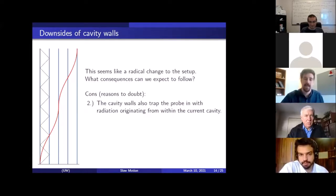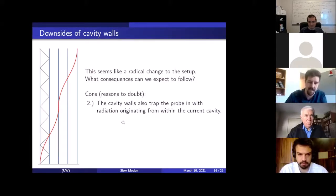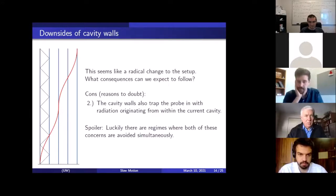Okay that's a valid concern. And second, there's a second concern is that cavity walls also trap the probe in with radiation from within the current cavity. In the spacetime diagram here I've drawn these black lines which is a null particle moving back and forward across the cavity and you can see if the probe doesn't escape the first cavity quick enough, if it exits somewhere up here at the top half of the diagram, it will interact with this same photon many times going back and forward and any other junk that it emits will also bounce back and forward, right? So the probe would in this sense be seeing its own reflection in the cavity walls, which would not be a good thing. But to give a spoiler for the later bit at the top, luckily there are regimes where both of these cons, as I've mentioned, are avoided and they're avoided simultaneously.